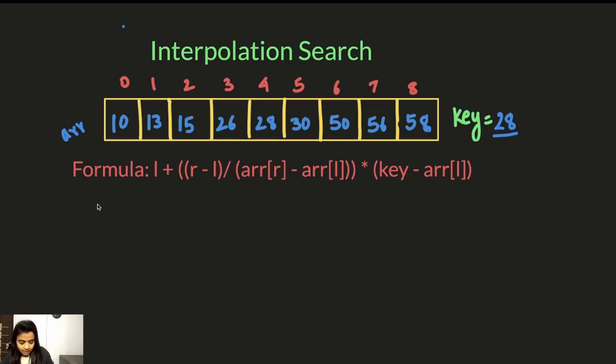So now let's try to find the key 28 in this array. So let's find an estimated index, which we will get by applying this formula. L which is our left is initially 0 and right R which is initially 8. So L is 0, 0 plus right is 8,